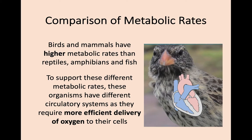The main principle is that birds and mammals have higher metabolic rates, and to support that higher metabolic rate they need a different circulatory system because they require more efficient delivery of oxygen to their cells. For the rest of this key area we're going to talk about the circulatory system — the heart and blood of different organisms — but always remember the principal point is efficient delivery of oxygen.